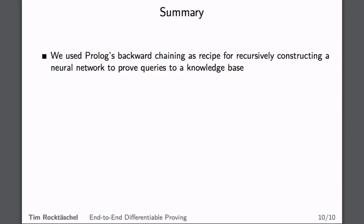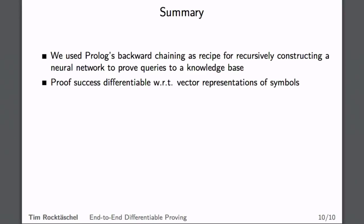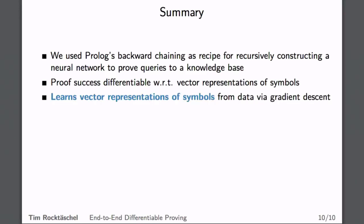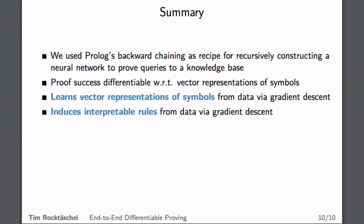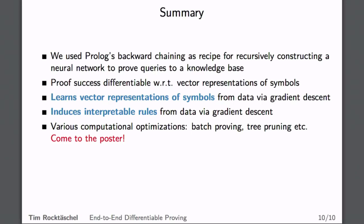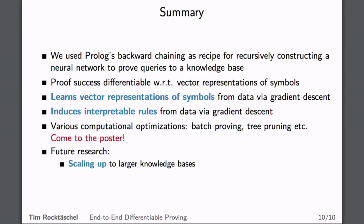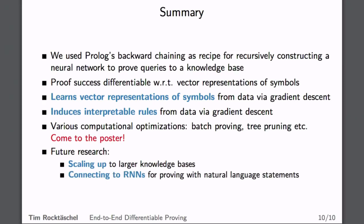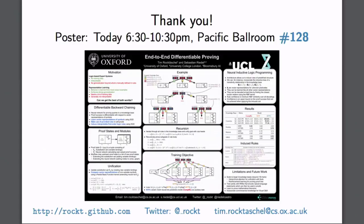To summarize: we used Prolog's backward chaining algorithm as a recipe for recursively constructing a neural network to prove queries to a knowledge base. The proof success is differentiable with respect to vector representations of symbols, allowing us to learn these from data using gradient descent and to induce interpretable rules. Various computational optimizations were needed, including batching proof of many queries simultaneously on a GPU and dynamic tree pruning. For future research, we are keen to scale this up to larger knowledge bases and to connect these models to recurrent neural networks that encode natural language for question answering.